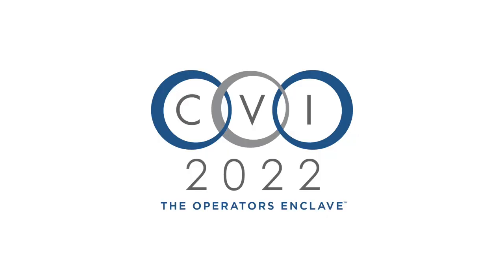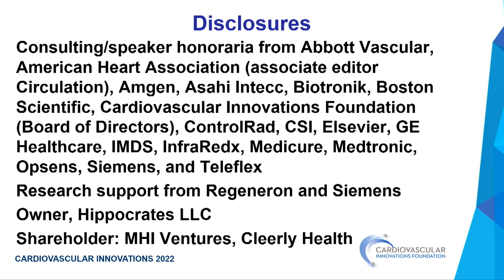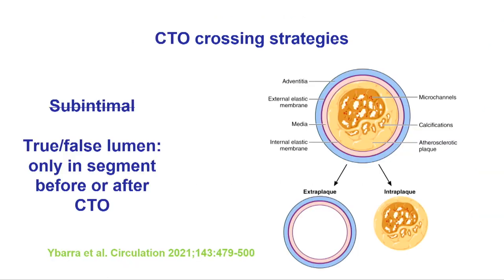Thank you. Our next speaker will discuss CTO crossing algorithms. We now have new nomenclature with the CTR document — we call it extraplaque instead of subintimal. There are four ways to cross a lesion: antegrade wiring, antegrade subintimal re-entry, retrograde wiring, and retrograde subintimal re-entry. The more complex the lesion, the more likely you are to need retrograde and ADR, but more advanced techniques carry higher risk — which may reflect technique or the higher-risk lesion subset.